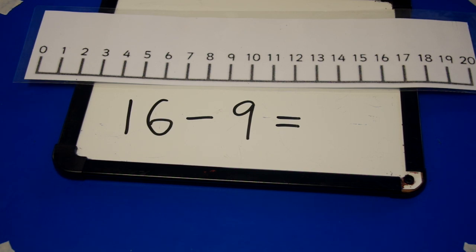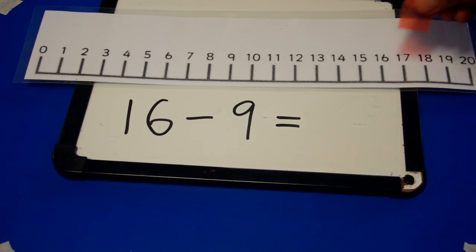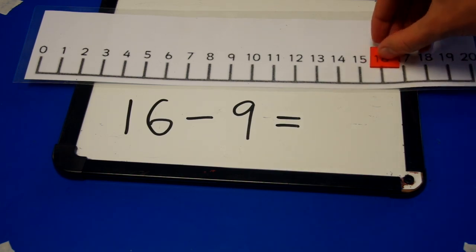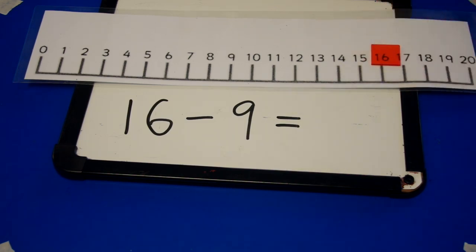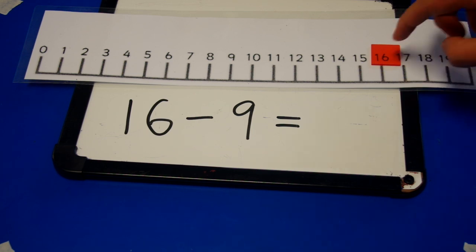Today we're looking at subtraction. We're going to be counting back on a number line. In front of me I have the problem 16 take away 9. I'm going to use this number line to help me solve it. I'm going to put my counter on 16 and I'm going to move it back 9 spots.